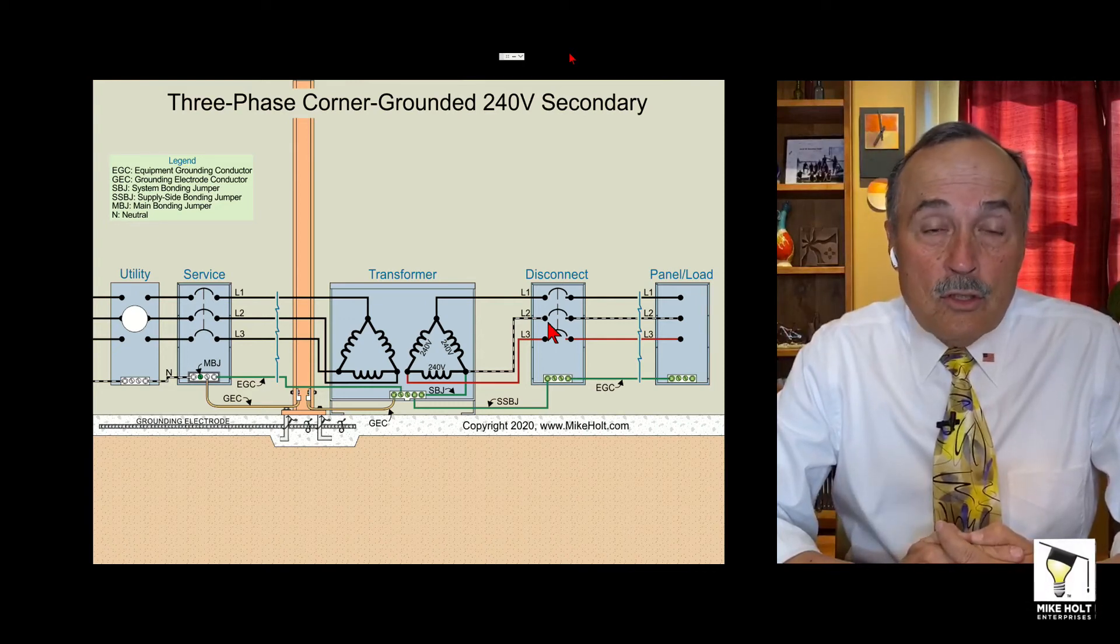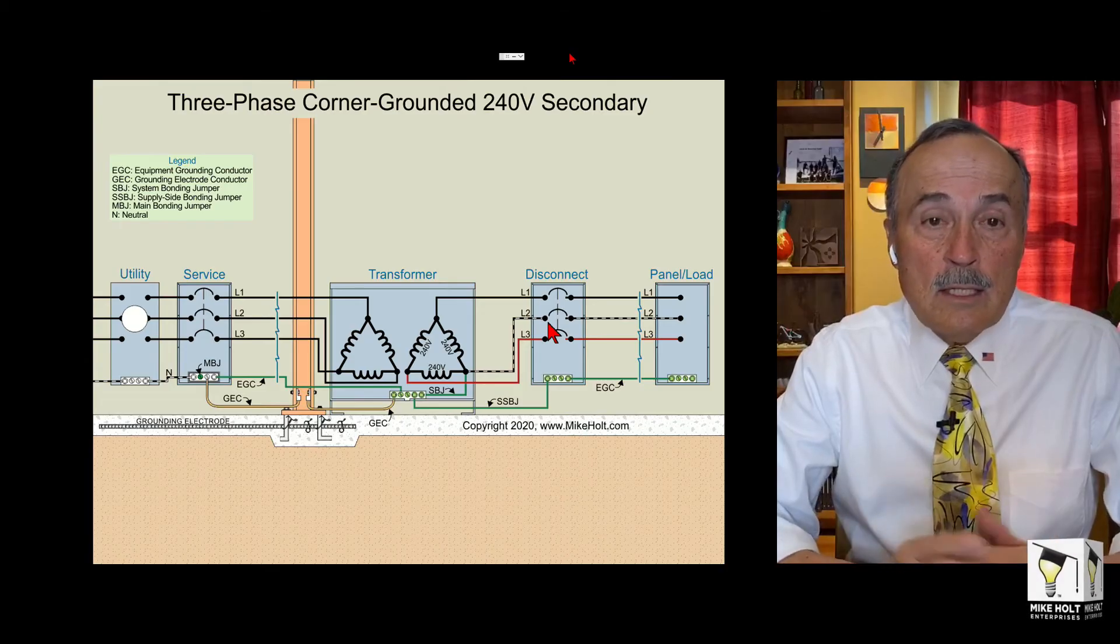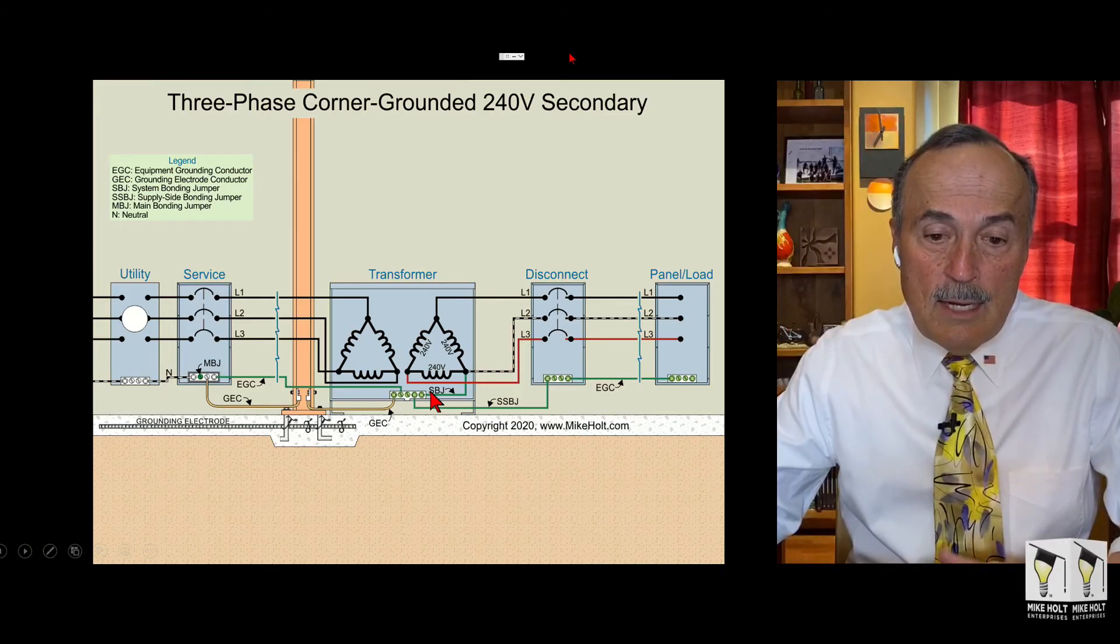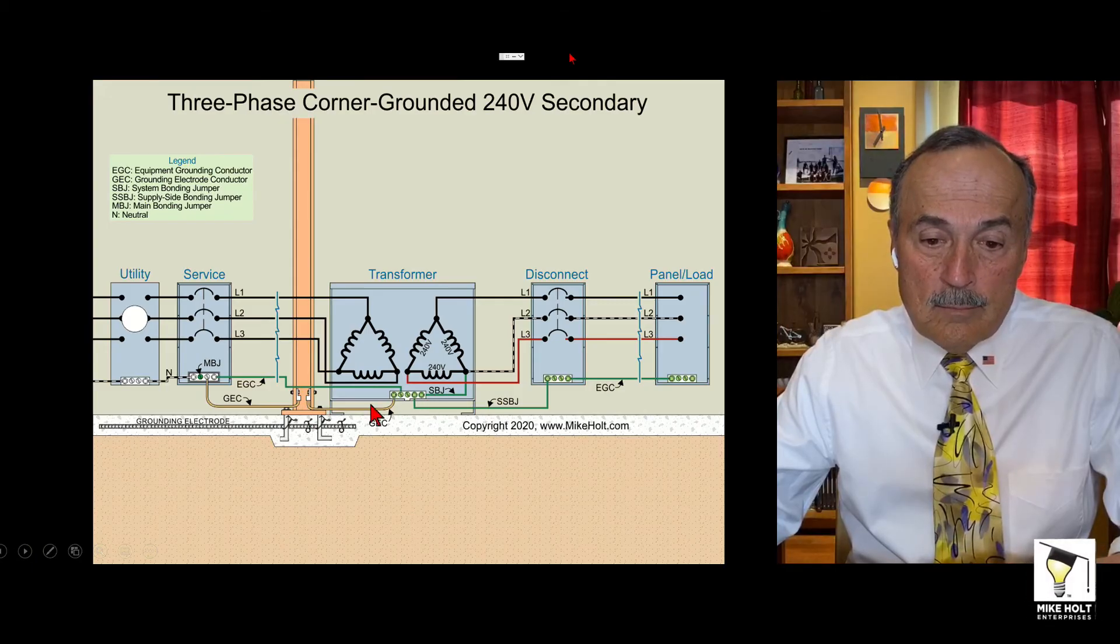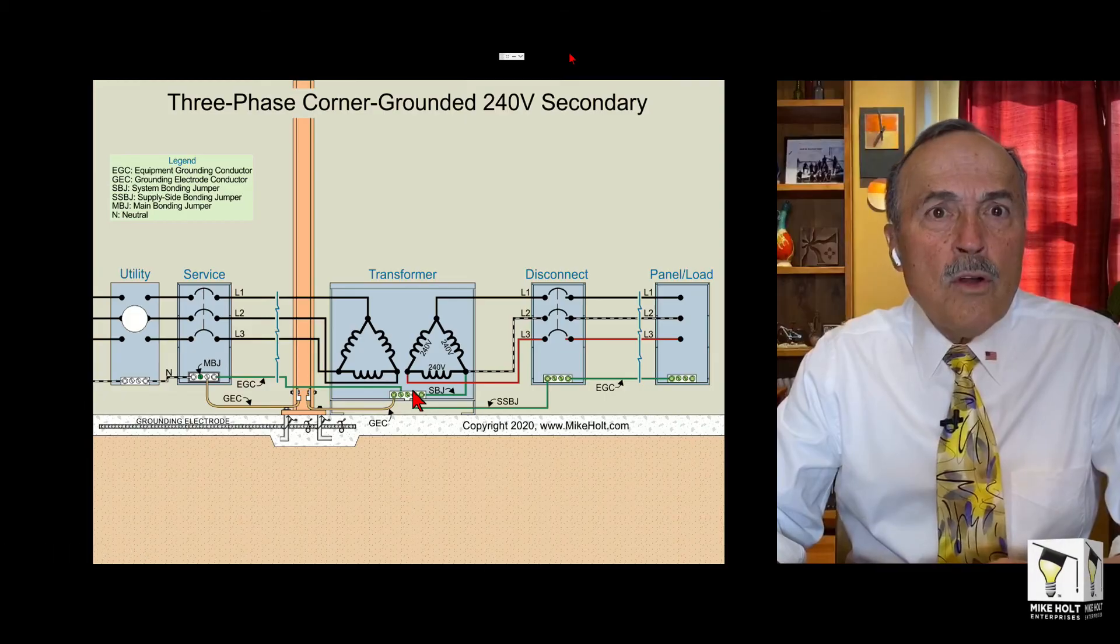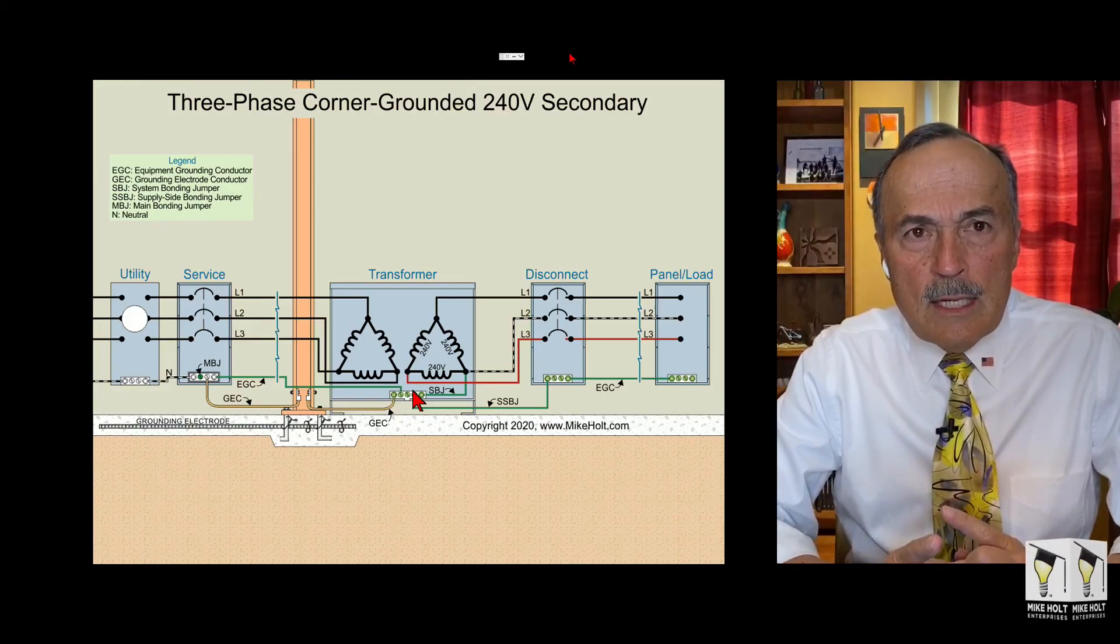As long as you terminate it properly and you identify the conductors so we know that's a grounded conductor and it's grounded right here - here's your system bonding jumper that grounds that particular system, there's your grounding electrode conductor. I'm wondering from those guys watching this if you give me feedback if you've seen corner grounded delta systems.